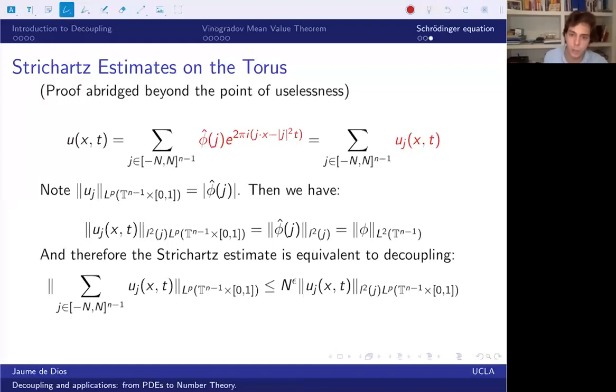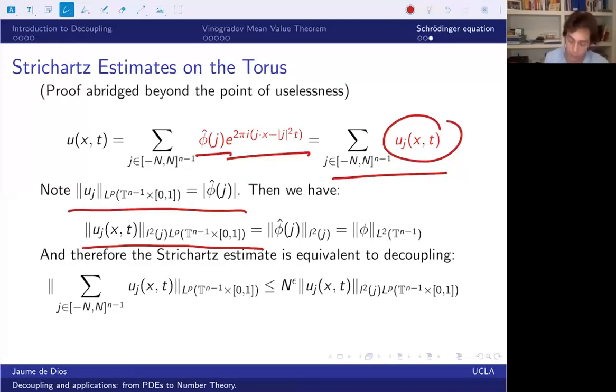Each of these uj's is something that's one times something that's phi hat j. In particular, its norm is exactly equal to phi hat j. And now remember that we have to compute the L2 Lp norm for the decoupling. The Lp part we've done, and now we have to do the L2 norm. But the L2 norm of the phi hat j, that's Plancherel. So it's the same as the L2 norm of phi.